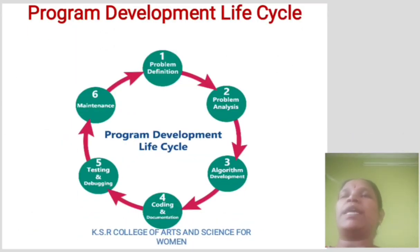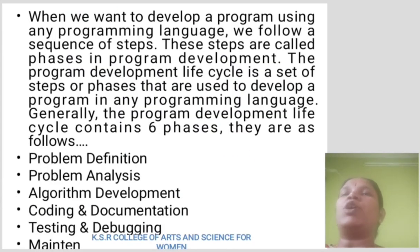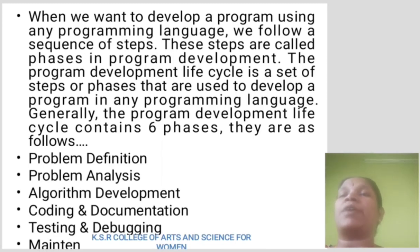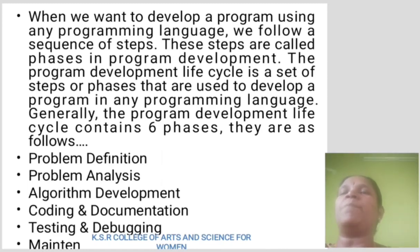Program development life cycle. The program development life cycle uses six steps. When we want to develop a program using any programming language, we follow a sequence of steps called the phases in program development. The program development life cycle is a set of steps used to develop a program in any programming language. Generally it contains six phases: problem definition, problem analysis, algorithm development, coding and documentation, testing and debugging, and maintenance.